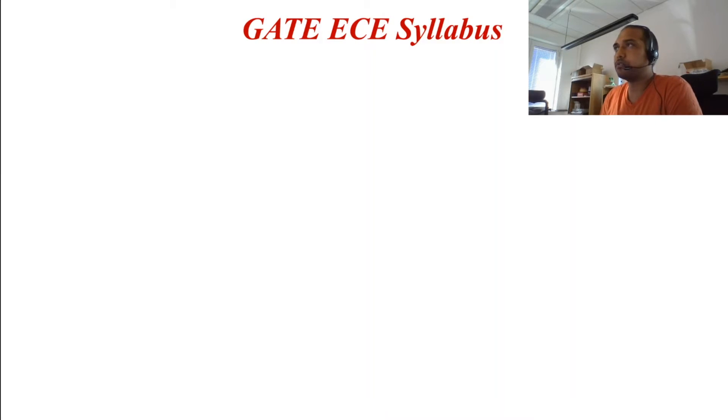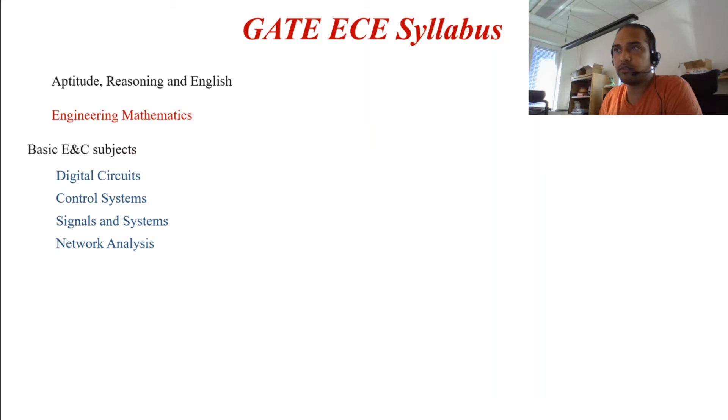The first part in the syllabus of GATE electronics and communication is the aptitude reasoning and English, and then you have the engineering mathematics. Then comes the actual basic subjects of electronics and communication which are digital circuits, control systems, signals and systems and network analysis. And then you have the actual core subjects which are electronic devices, analog circuits, communication systems and electromagnetics.